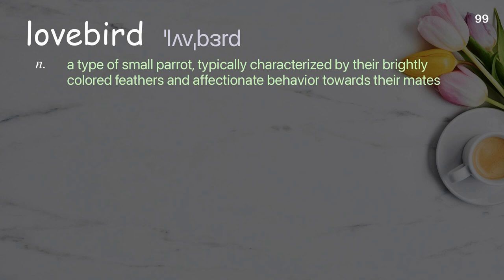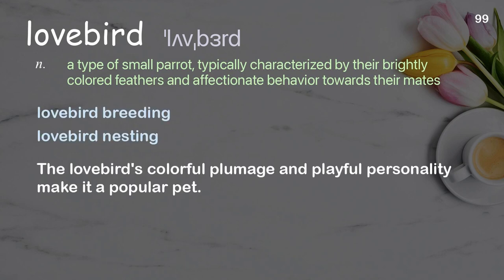Lovebird: a type of small parrot, typically characterized by their brightly colored feathers and affectionate behavior towards their mates. Examples: lovebird breeding, lovebird nesting. The lovebird's colorful plumage and playful personality make it a popular pet.